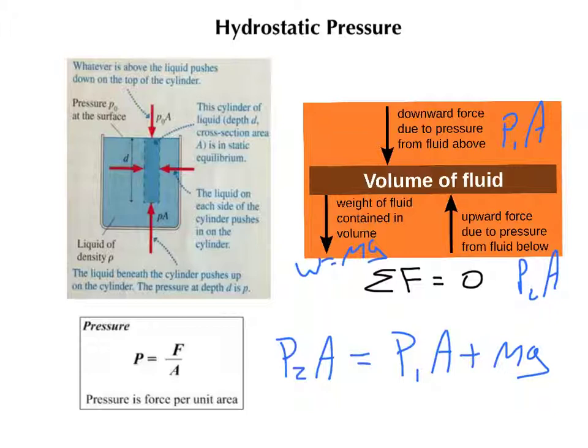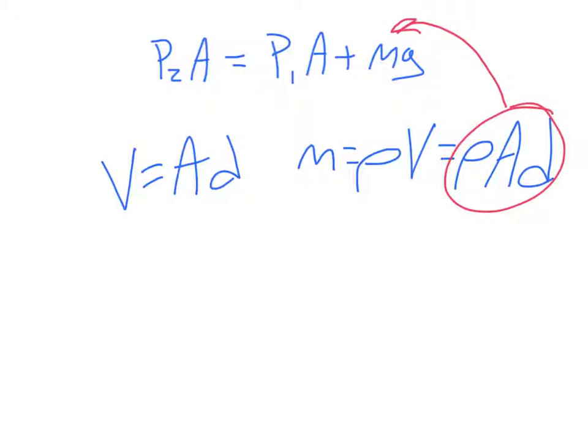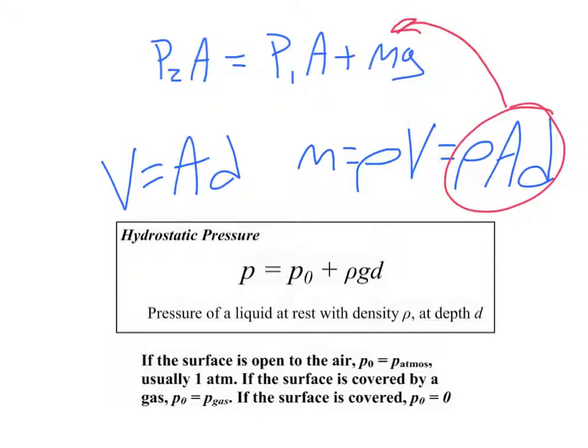Now, remember, this liquid is a cylinder of a cross-sectional area, A, and a height, D. Its volume is V equals AD, and its mass, remember, from our density equation, is density times volume. So, density times area times D. If we substitute this, then, into the expression for the mass of the liquid up here, we find that the area cancels from all the terms, and it results in the hydrostatic pressure equation.